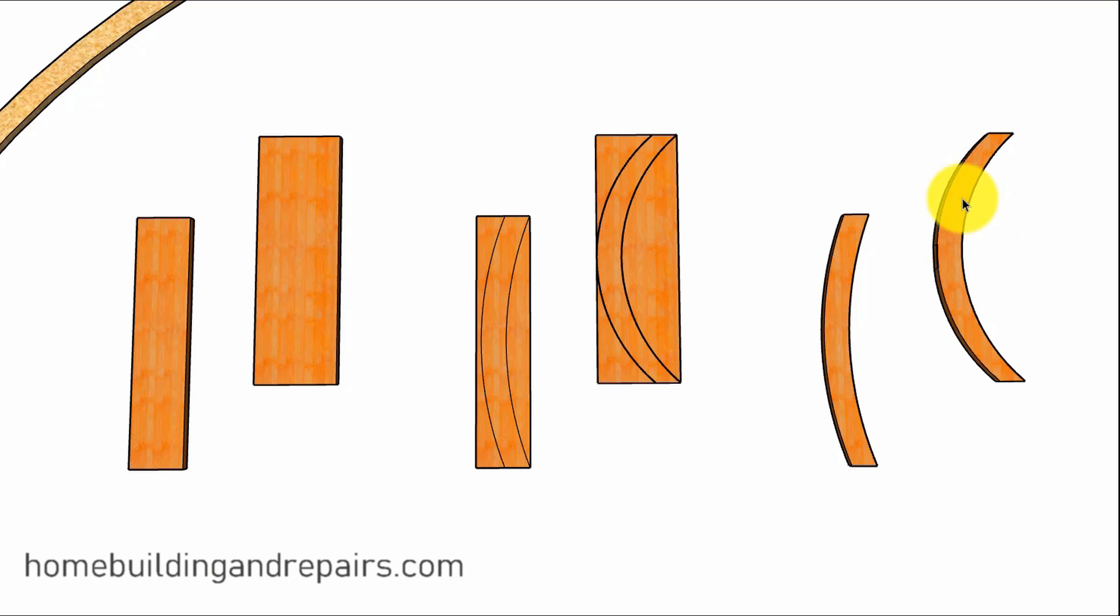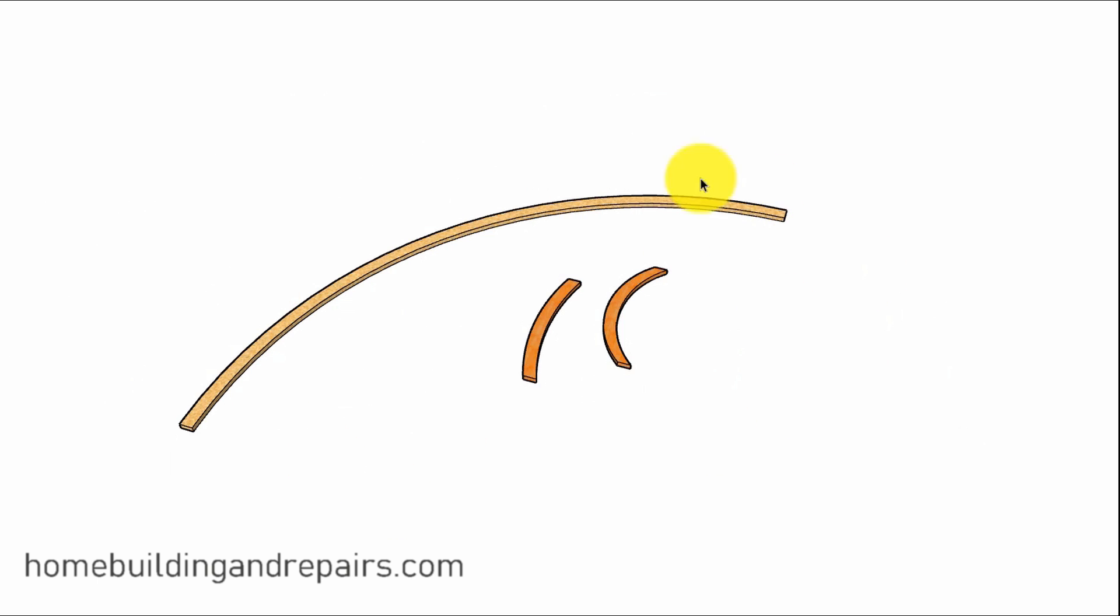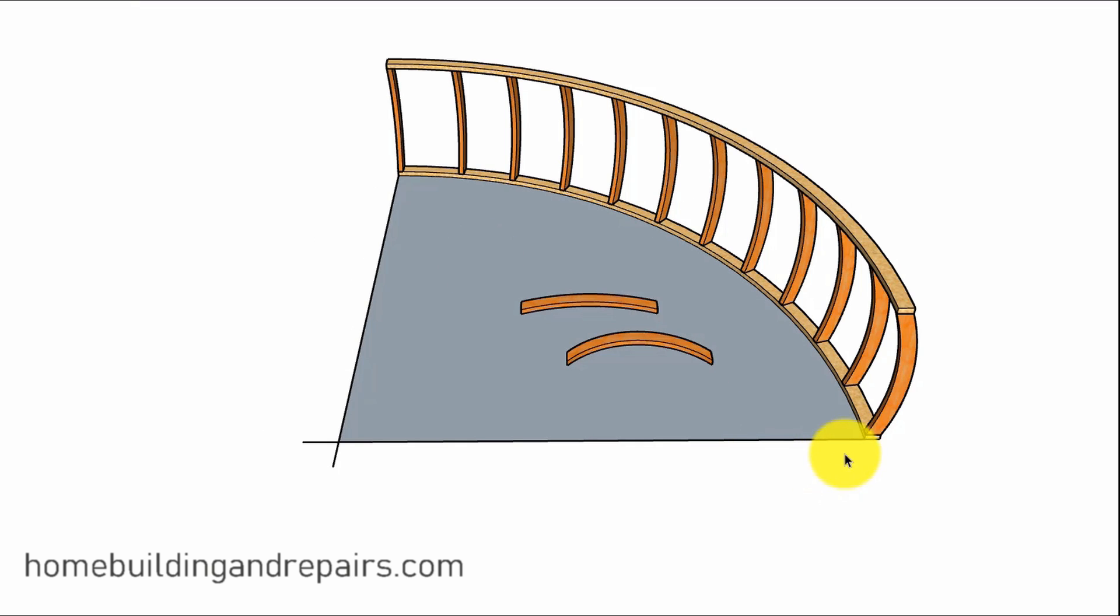If you need something a little more curved, you can use a 2 by 12. Something like this should work just fine. Then we will be able to cut all of our pieces that we need and assemble our wall. So let's go ahead and put it together.